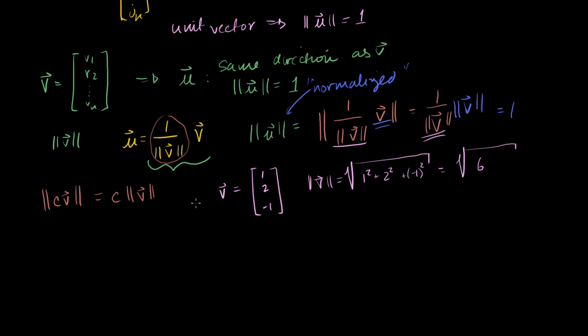So if I want to construct a normalized vector u that goes in the same direction as v, I can just define my vector u as being equal to 1 over the length of v, 1 over the square root of 6, times v. So times 1, 2, minus 1, which is equal to 1 over the square root of 6, 2 over the square root of 6, and minus 1 over the square root of 6. And I'll leave it for you to verify that the length of u is going to be equal to 1.